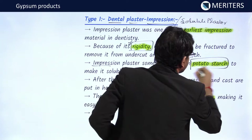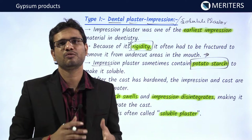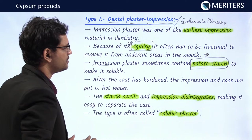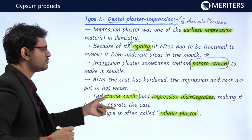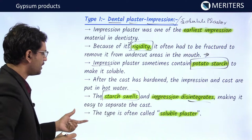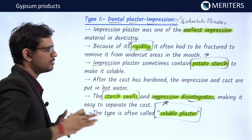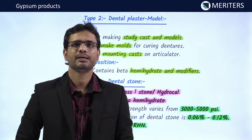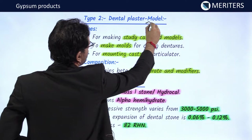Impression plaster sometimes contains potato starch, which helps in easy dissociation of the impression material from the cast. After the cast hardens, both the impression and cast are placed in hot water. The potato starch swells and the impression disintegrates, making separation easy. Due to this solubility property, it is known as soluble plaster.